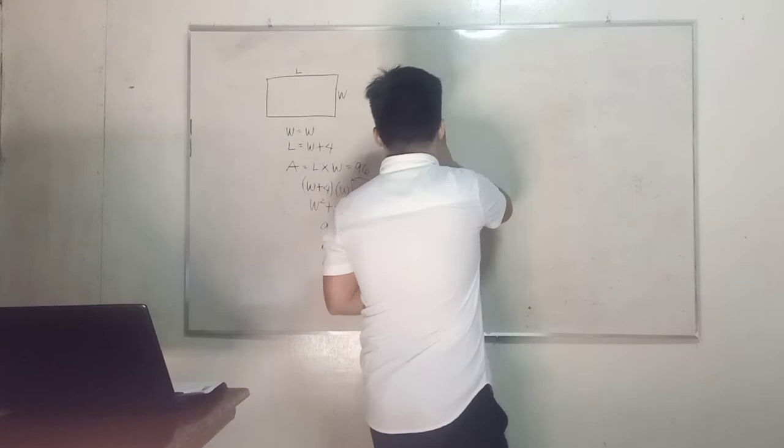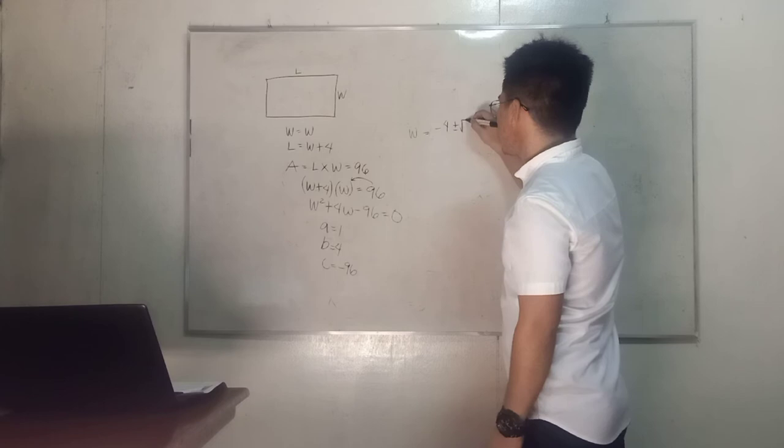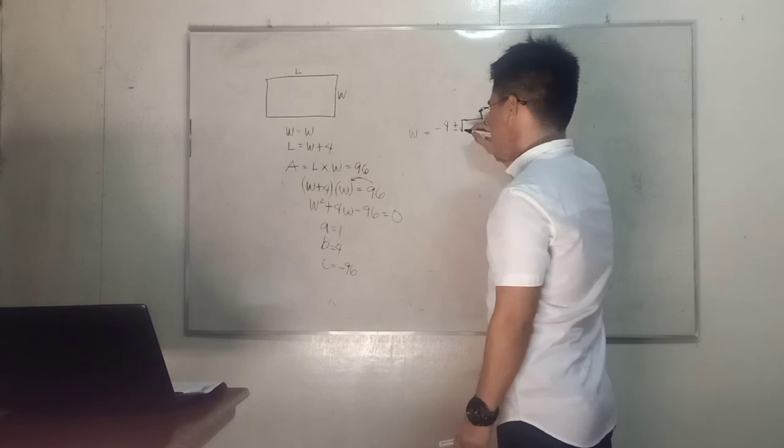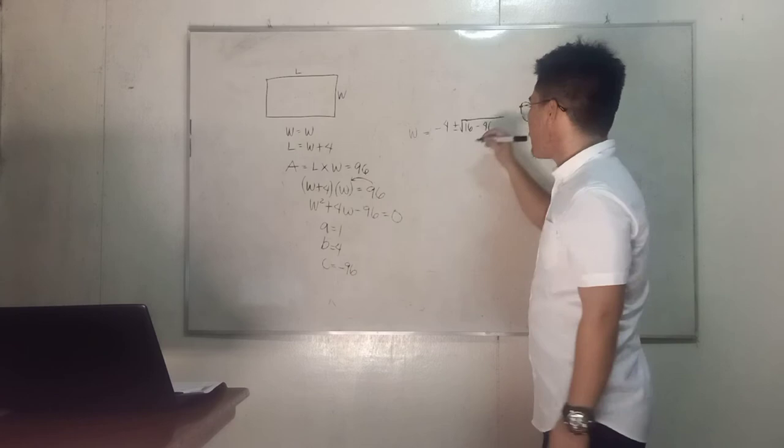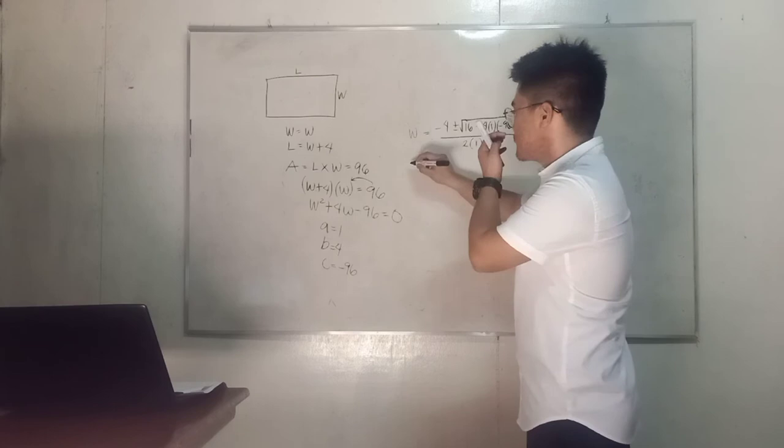Now let's find the value of our w. We have negative b, negative 4, plus or minus the square root of, what is the value of our b? Yes, 4. So we have 16 minus 4, what is our a? 1. And our c is negative 96.